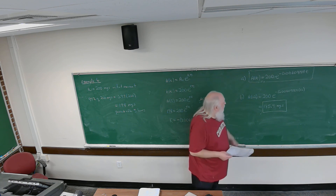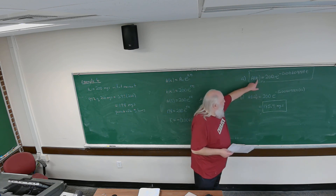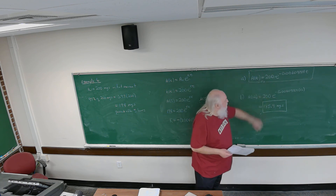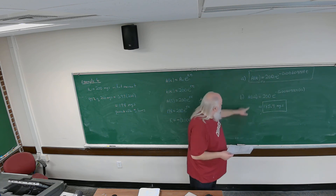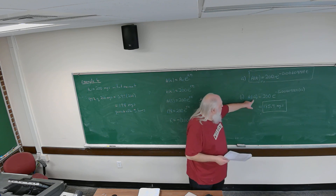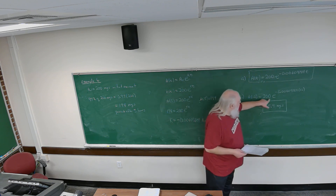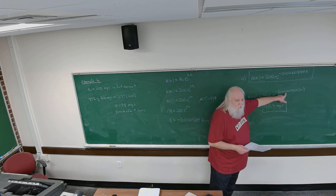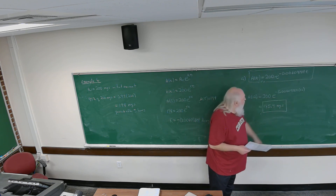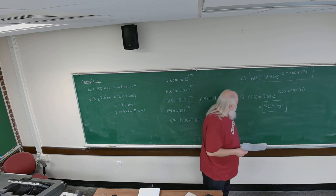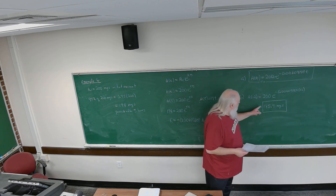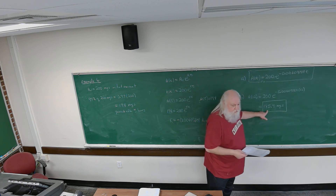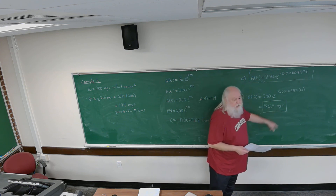In part b, we're asked to find the amount remaining after 12 hours. To find the amount remaining at 12 hours, I put 12 in for t. So a(12) equals 200 times e raised to that power, and when I do the arithmetic the amount remaining after 12 hours is 185.9 milligrams.